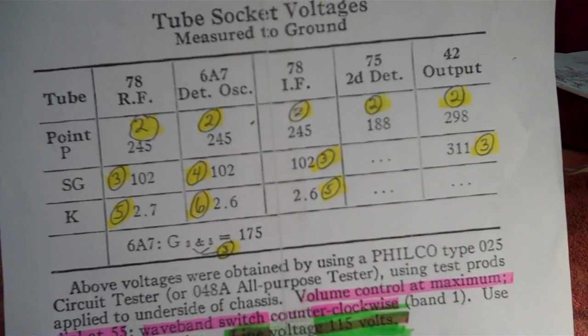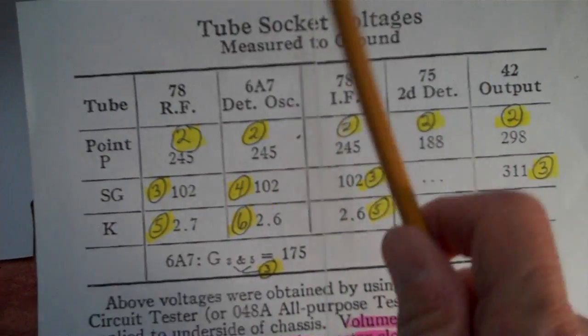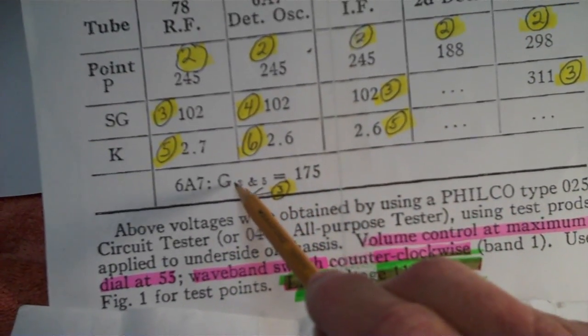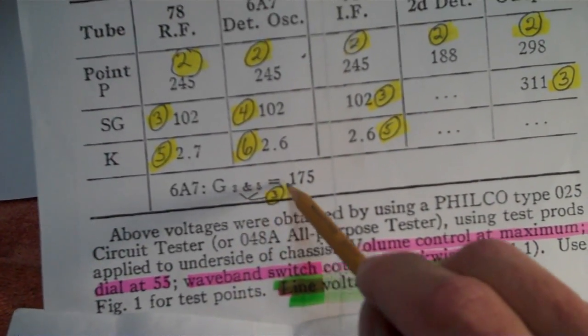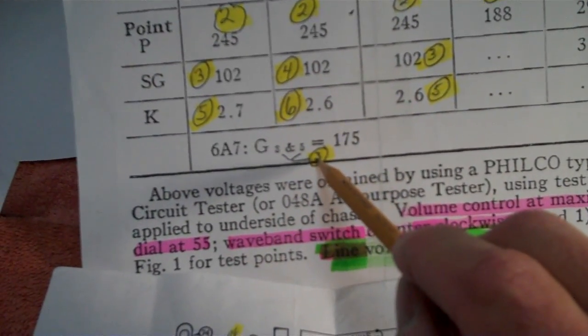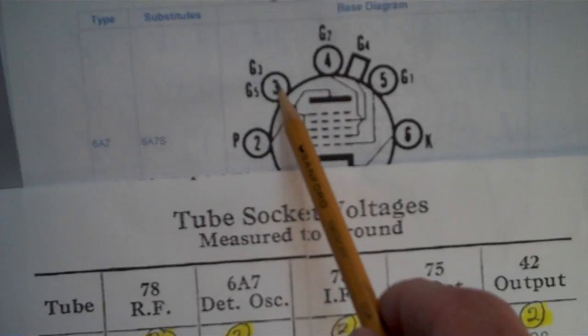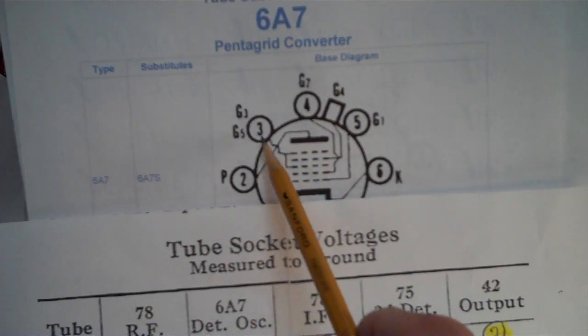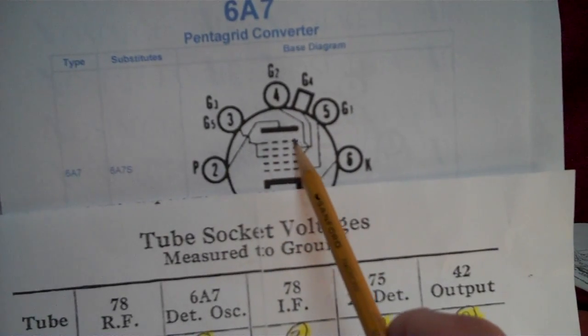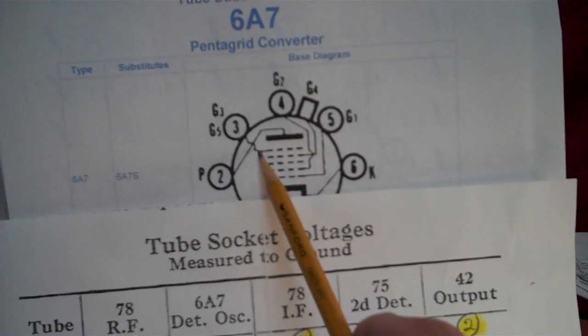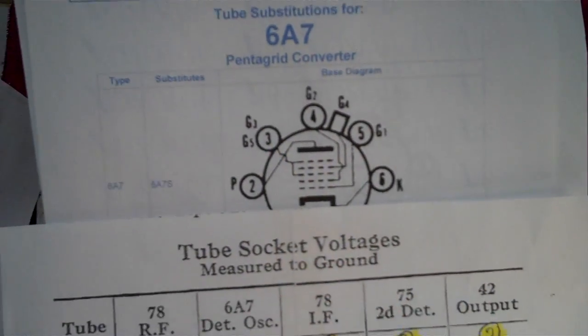Okay, everything has been marked and highlighted. Now let's take a look at this 6A7 right here. Down here it said on the 6A7 that grids 3 and 5 equal 175 volts. Now that turns out to be pin 3, and here's why. Pin 3, you'll see, is grid 3 and grid 5. And they come down there, and there's one grid, and there's the other grid right there. Two grids connected to the same point.